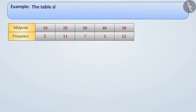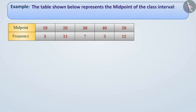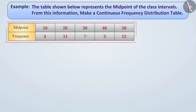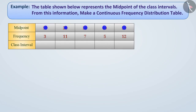Example: The table shown below represents the midpoints of the class intervals. From this information, make a continuous frequency distribution table. The midpoints of the class intervals are shown in the given table. To make a continuous frequency distribution table, we need to find the class intervals.